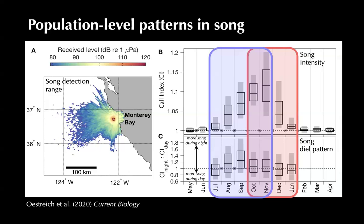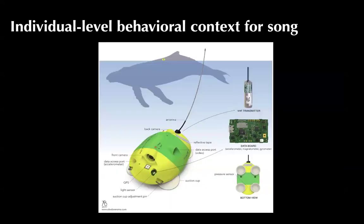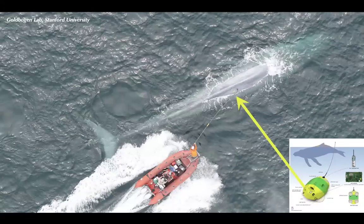To have such clear signals jump out over many years of recording over an enormous ocean area, representing many individuals' behaviors, it struck me that there must be a behavioral explanation for these patterns in both seasonal song intensity and diel patterns. To understand the behavioral context of this population-level pattern, I turned to individual-level methods using suction-cup-attached biologging tags that carry video cameras, audio recorders, accelerometers, GPS, and more, attached to the backs of whales in Monterey Bay.